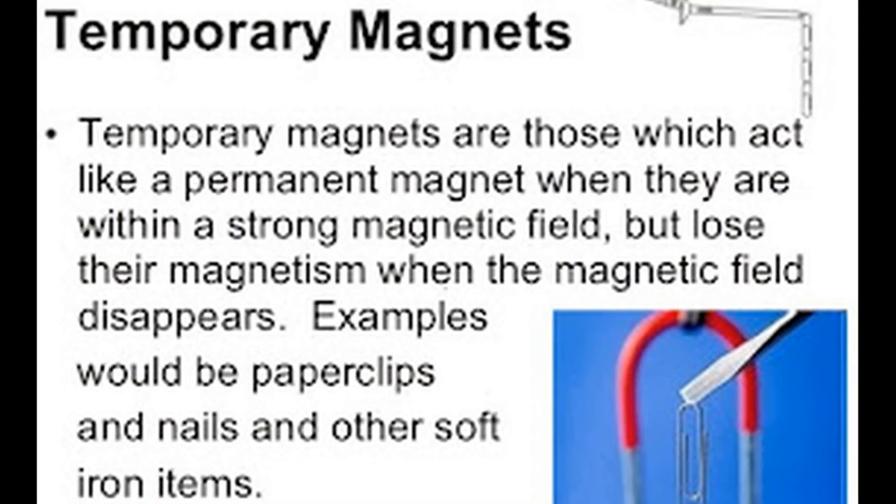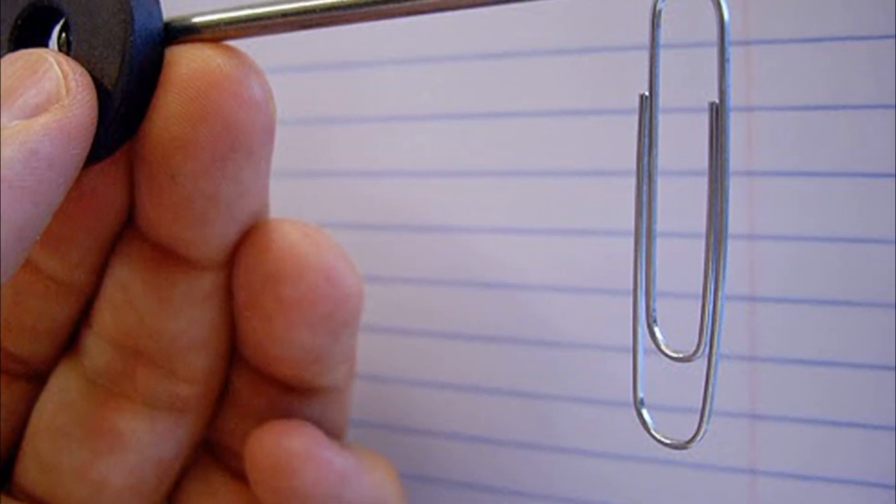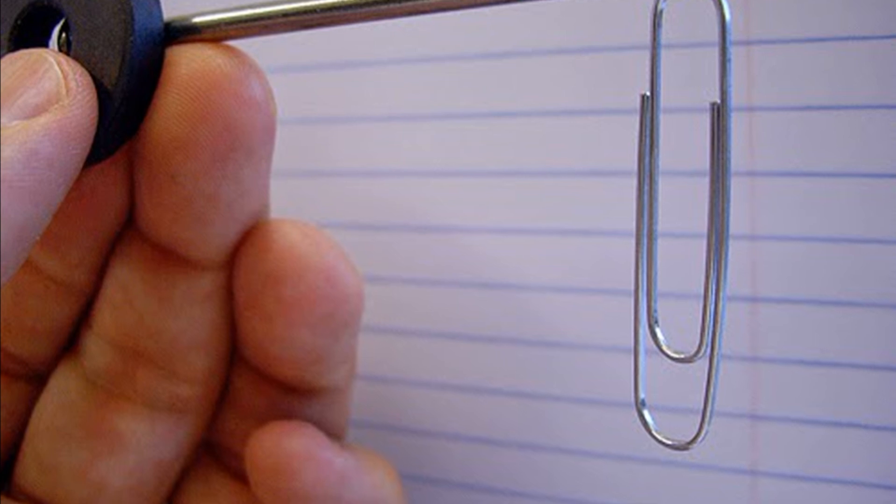Temporary Magnets: When a permanent magnet picks up a piece of iron or steel, the nail becomes a temporary magnet. The nail can pick up other bits of metal and will be attracted or repelled by the poles of another magnet.